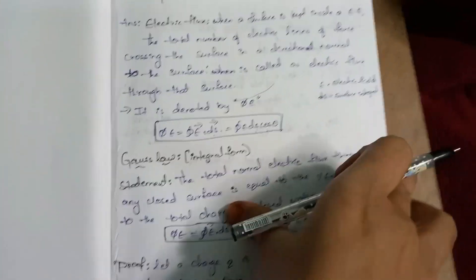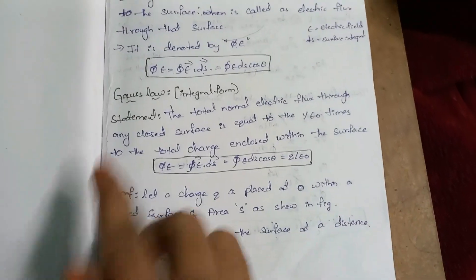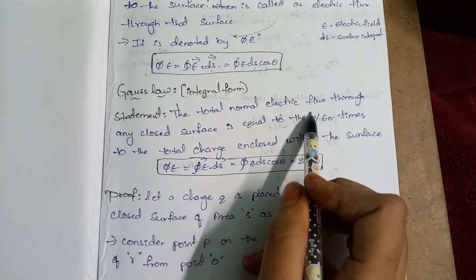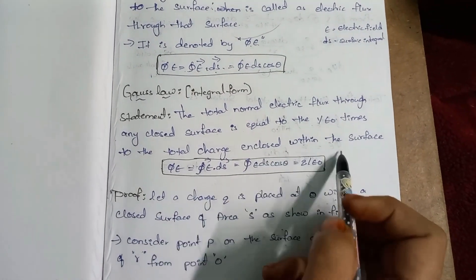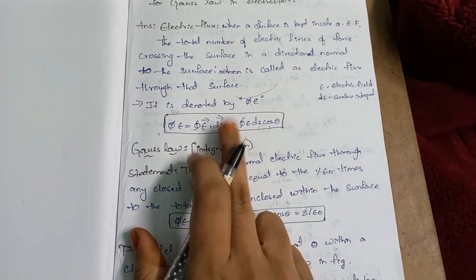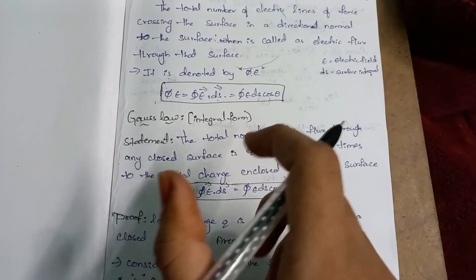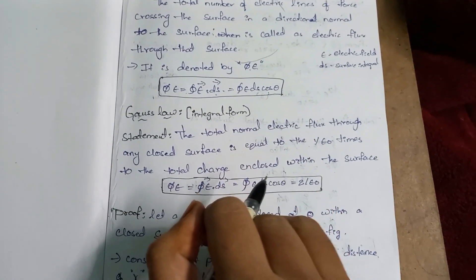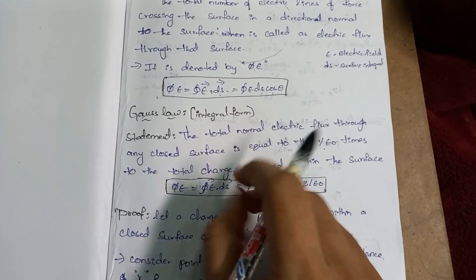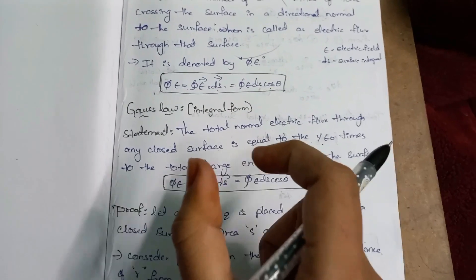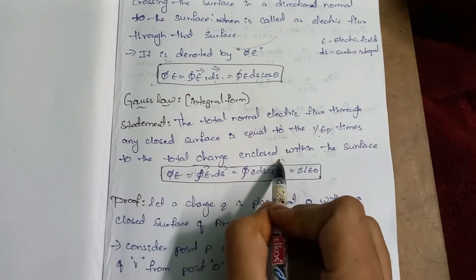Then we will discuss Gauss's law. There are two types: integral form and differential form. In the integral form, the total normal electric flux through any closed surface is equal to 1/ε₀ times the total charge enclosed within the surface. The electric flux is equal to 1/ε₀ times the total charges enclosed within the surface.